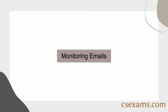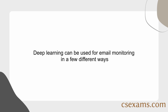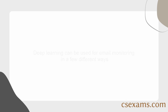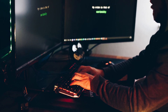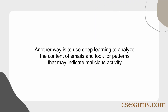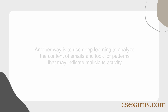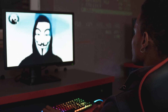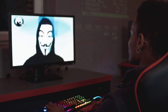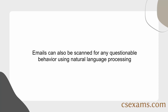Deep learning can be used for email monitoring in a few different ways. One way is to use a deep learning algorithm to automatically flag emails that contain potentially harmful content. Another way is to analyze the content of emails and look for patterns that may indicate malicious activity. Phishing attacks are typically carried out by sending emails to employees requesting critical information. To avoid these kinds of assaults, cybersecurity software and deep learning can be utilized. Emails can also be scanned for questionable behavior using natural language processing.